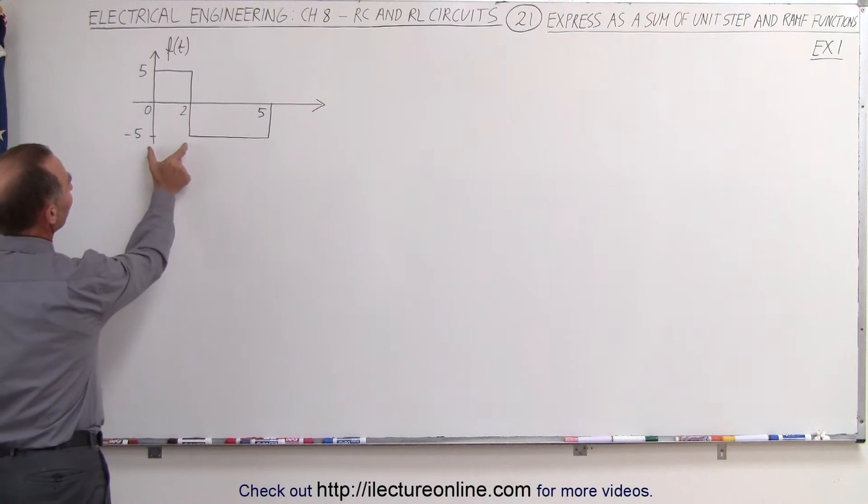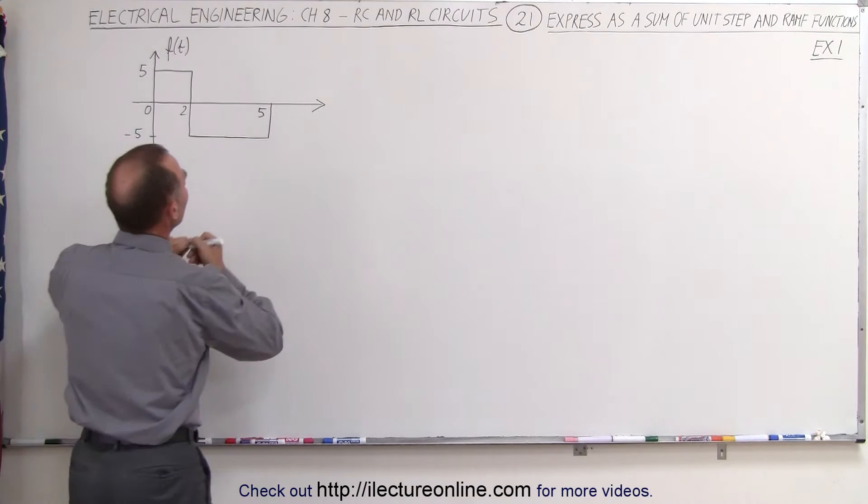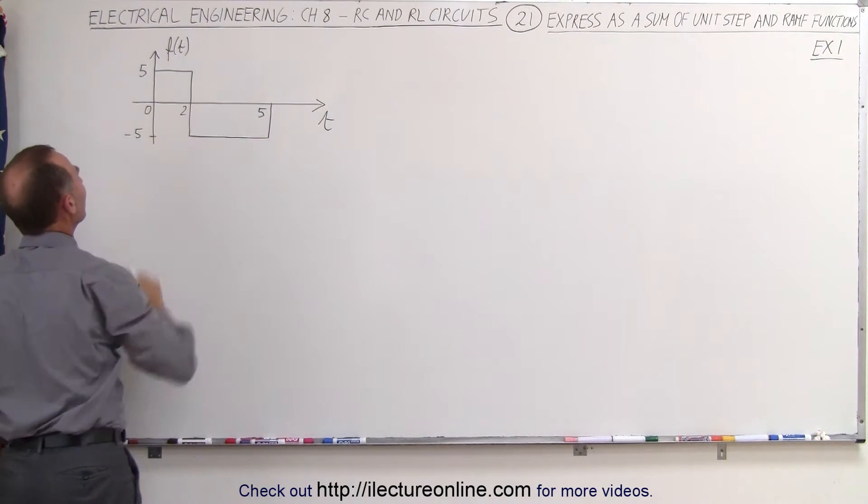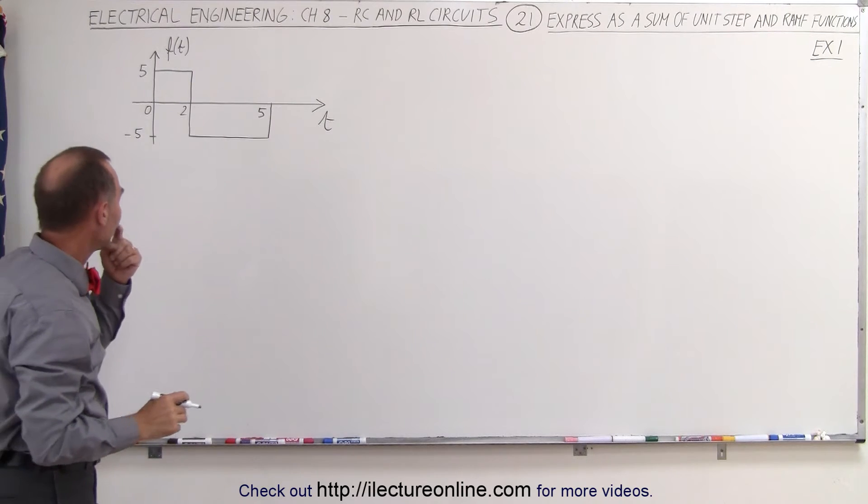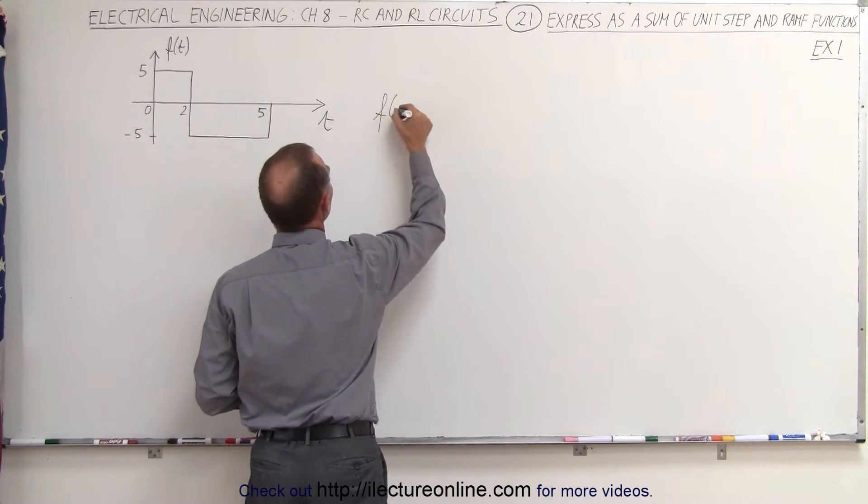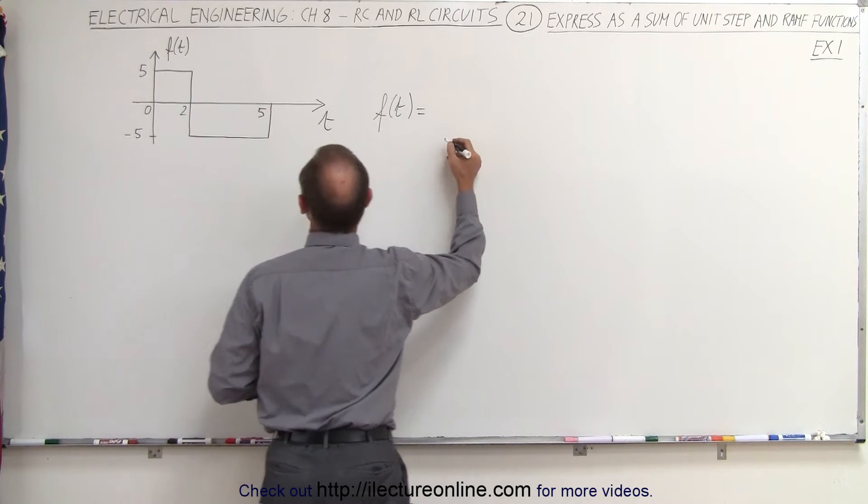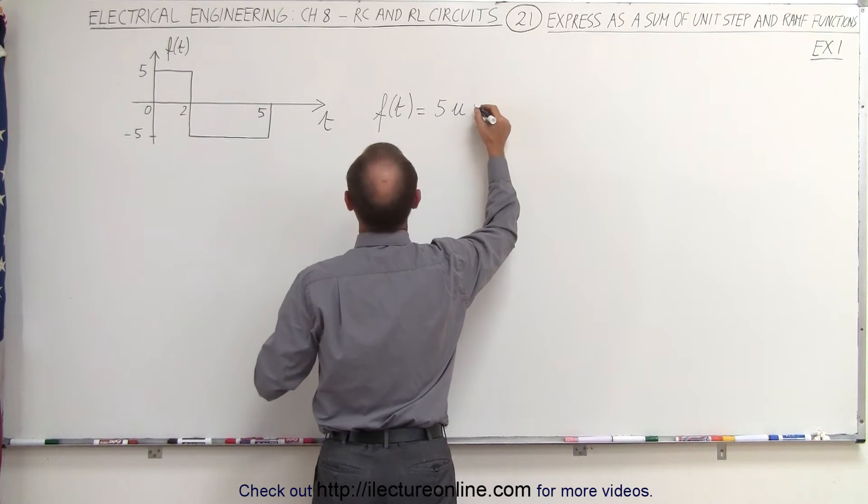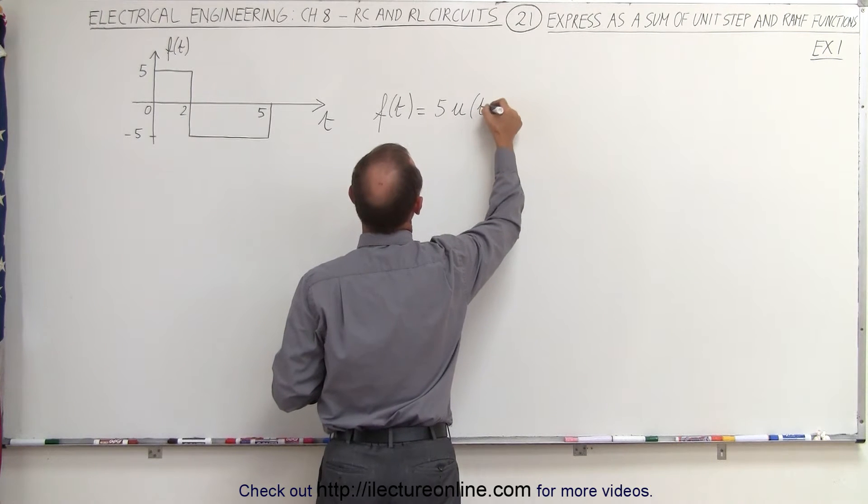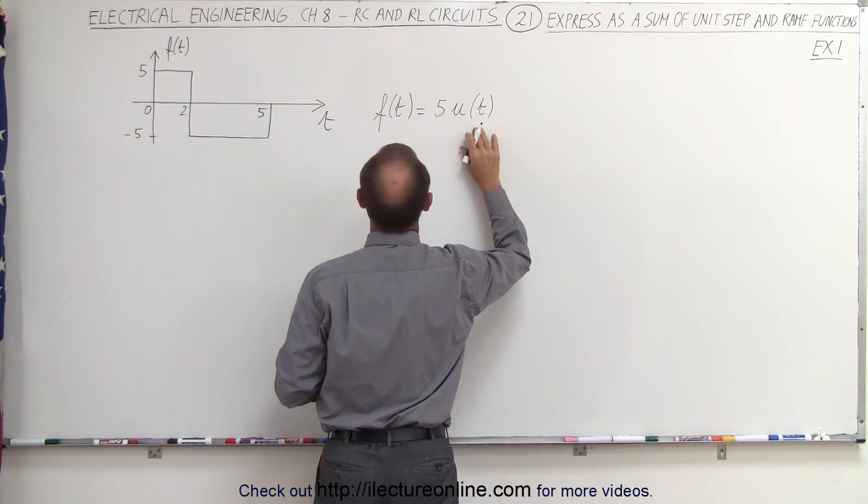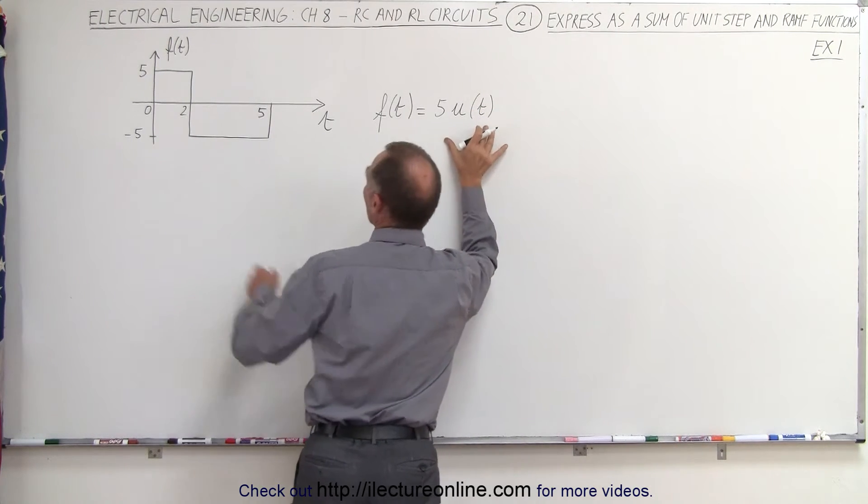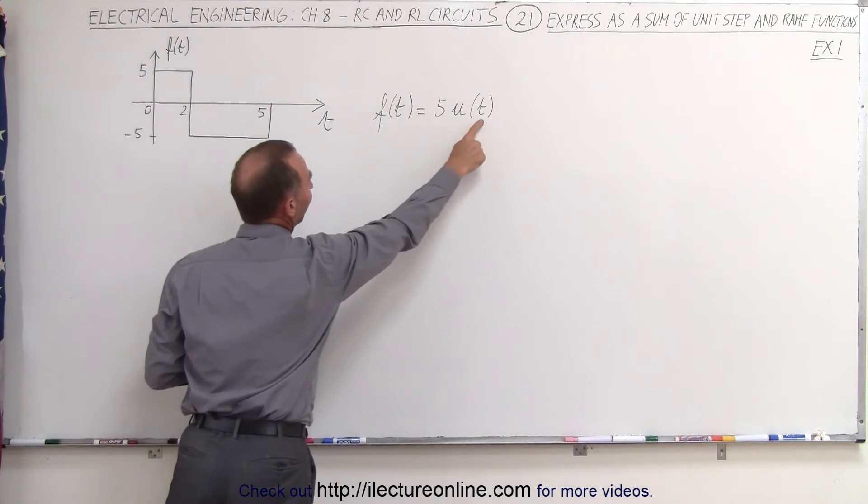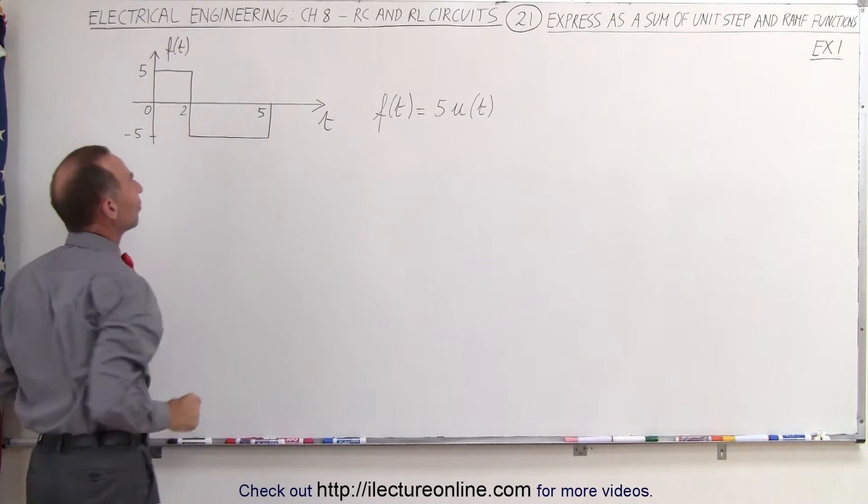First, we want to take care of the first two seconds right here. Assume the units here are in seconds. For the first two seconds, we have an input of magnitude 5. So f(t) is going to equal 5 times the unit step function at time equals 0. It's going to start at that point, and that will take care of the first one right here. We have a unit step function at time equals 0, so we have no offset on the time and the magnitude is 5.